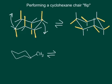We've converted from one chair where we go zigzag up, down, up, to another chair where we go down, up, down. When we do a chair flip, all of the groups that were previously in equatorial positions will now be axial, and everything that was axial is now equatorial.